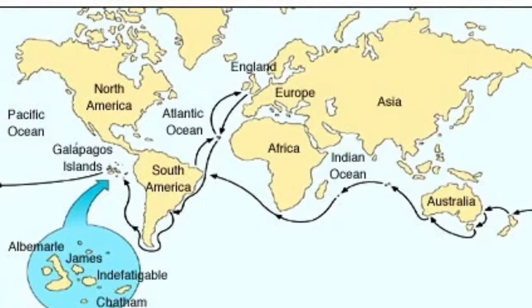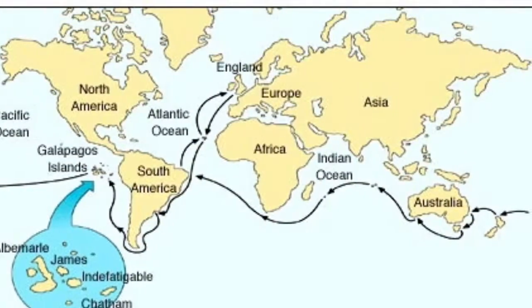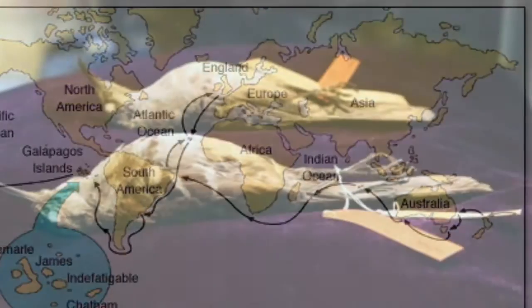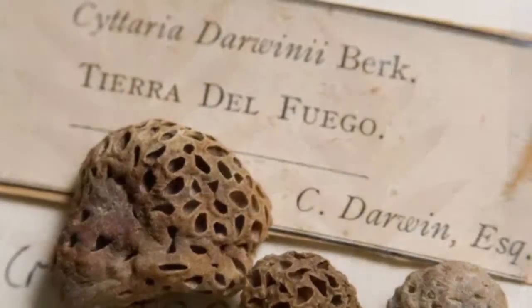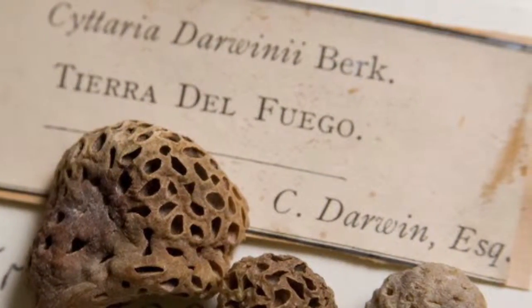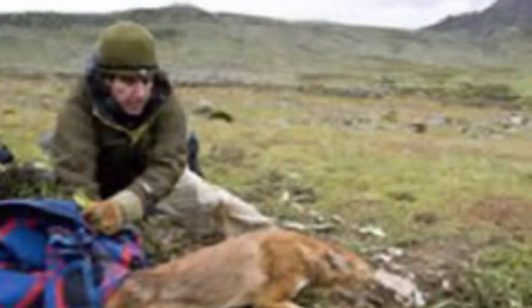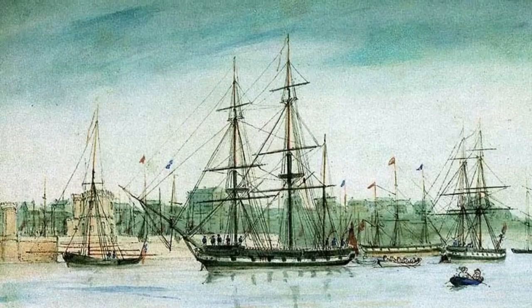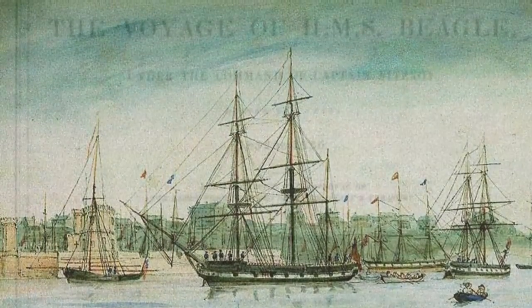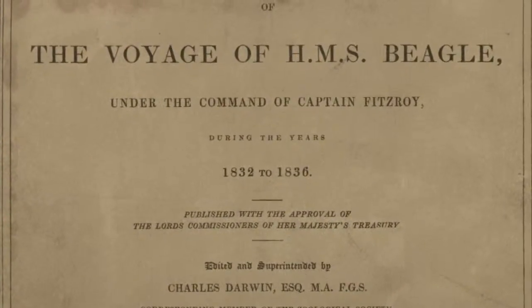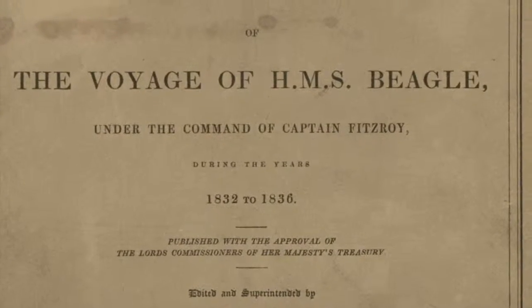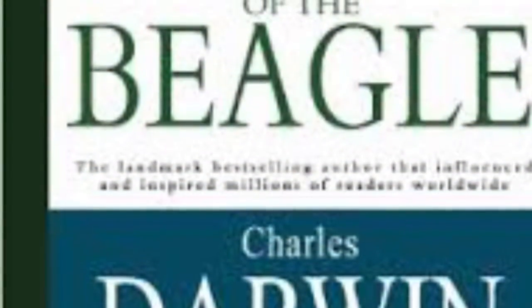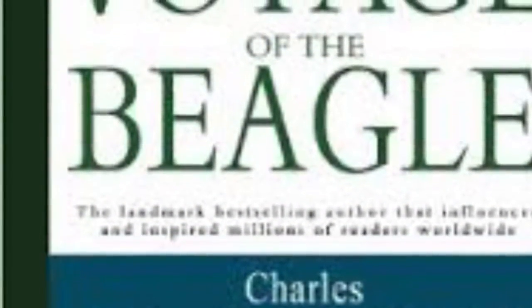Over the course of the trip, Darwin collected a variety of natural specimens, including birds, plants, and fossils. Darwin had a first-hand opportunity to closely observe principles of botany, geology, and zoology. Upon his return to England in 1836, Darwin began to write up his findings in the Journal of Researches, published as part of Captain Fitzroy's larger narrative, later edited into the Zoology of the Voyage of the Beagle.